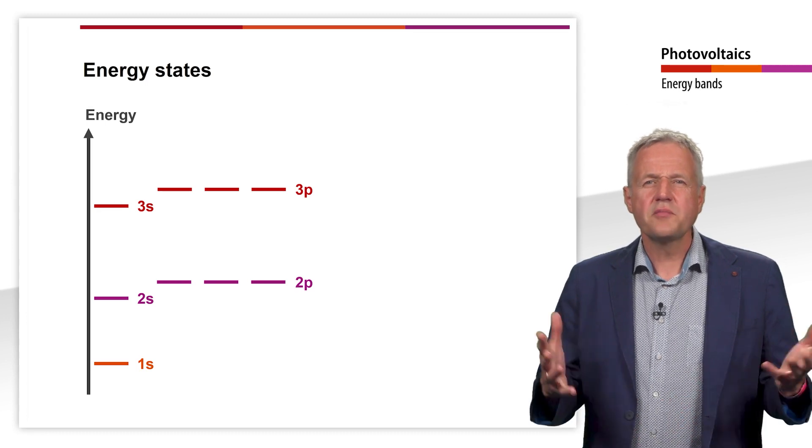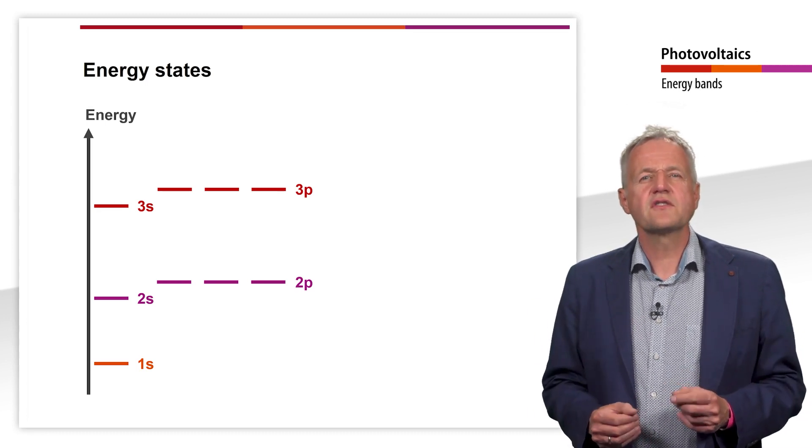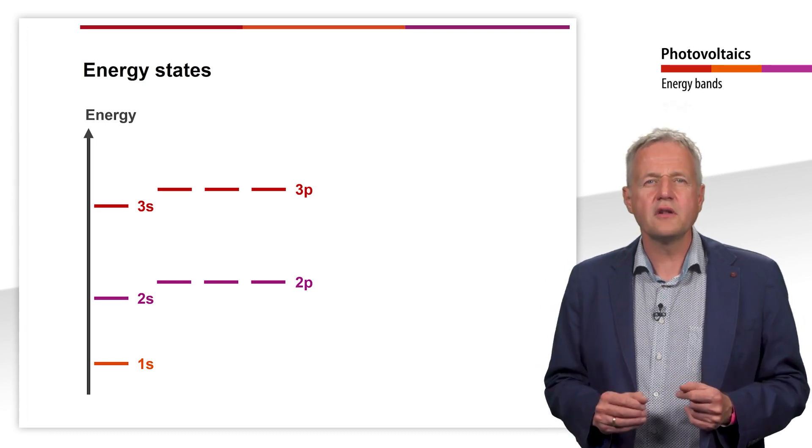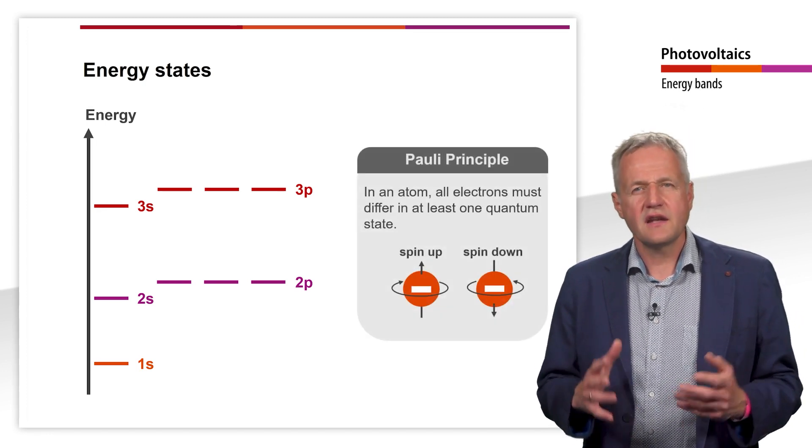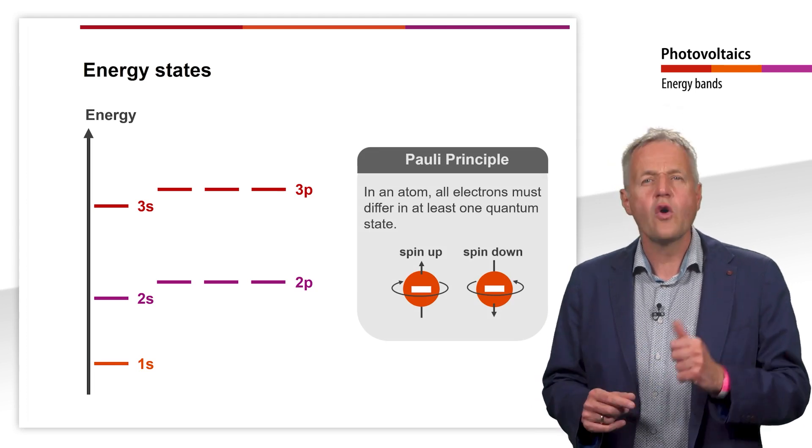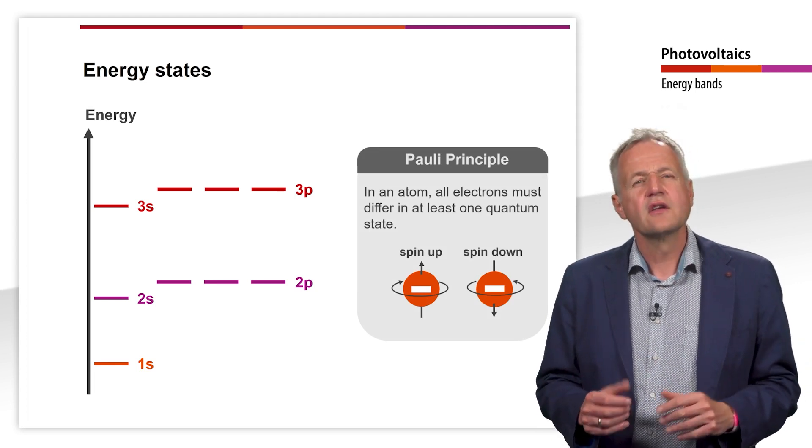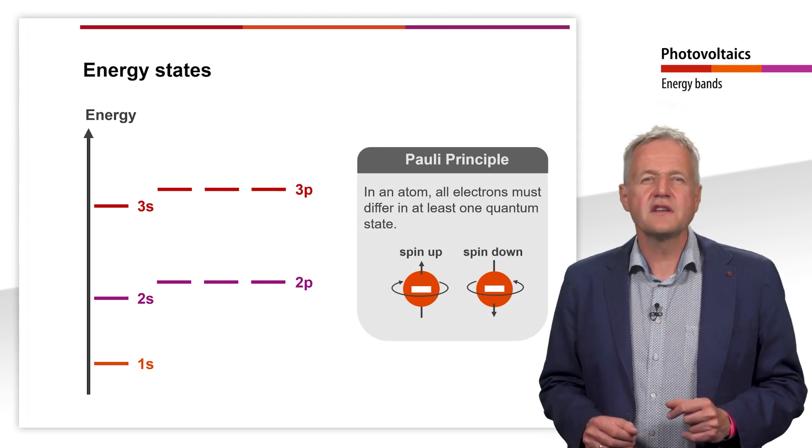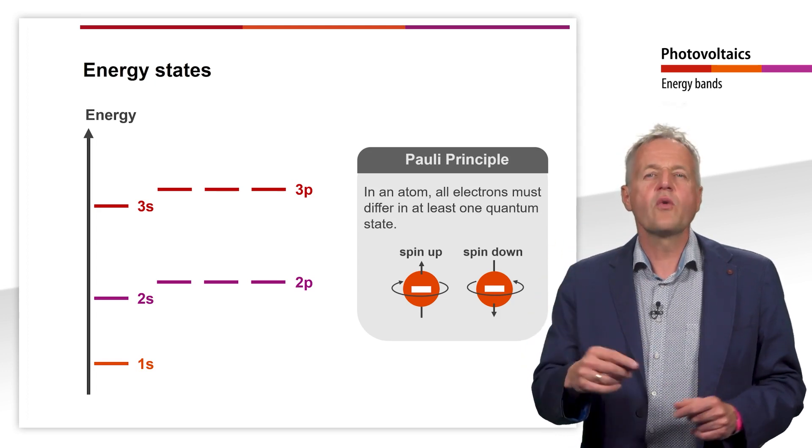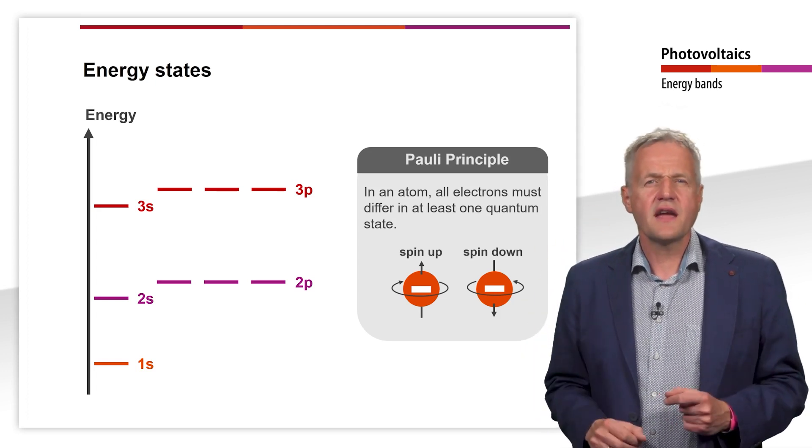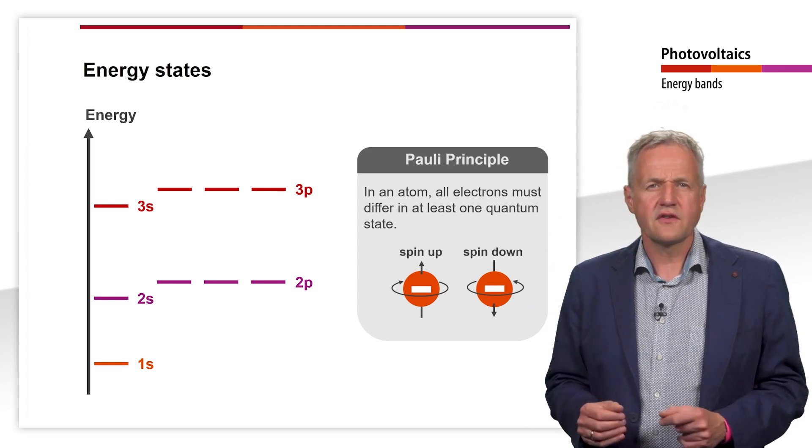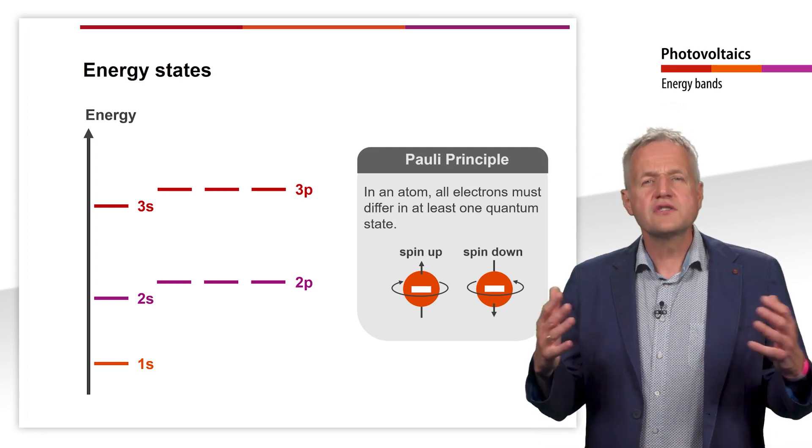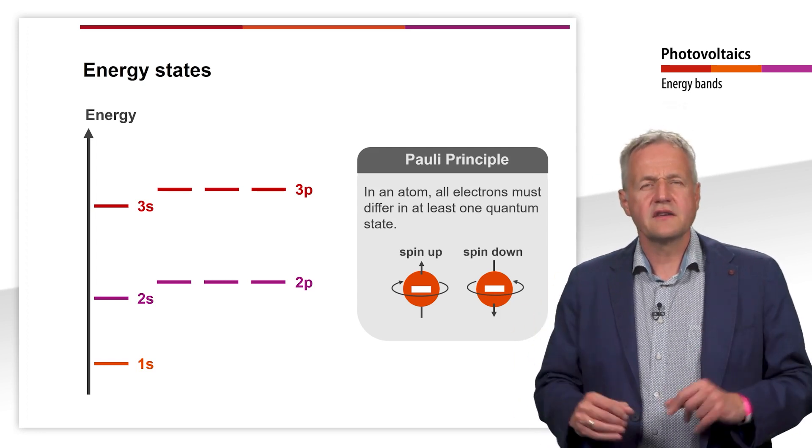However, there cannot be any number of electrons in an orbital. According to the so-called Pauli principle, the electrons in an atom must differ in at least one quantum state. The only quantum state in which the electrons can differ within an orbital is the spin, in other words the sense of rotation. It can take on exactly two values, spin up or spin down. Therefore, only two electrons can reside in each orbital.